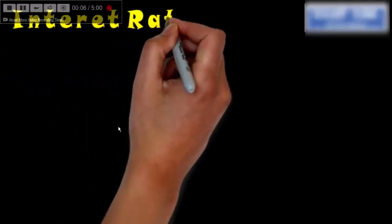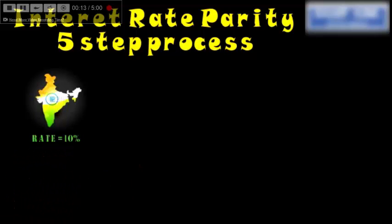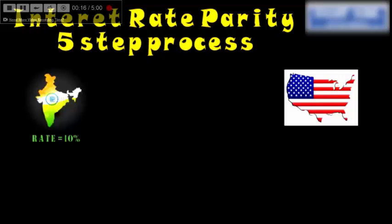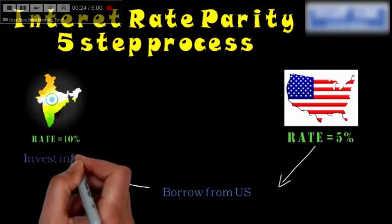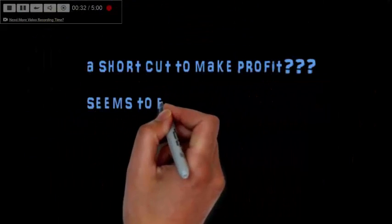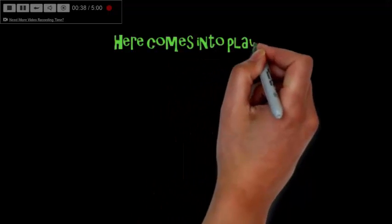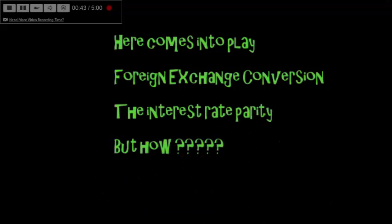In this video we are going to discuss the interest rate parity — the logic, an example, and the process. In India the interest rate is 10%, and in the US the borrowing rate is 5%. So one might think to borrow from the US and invest in India to make a gain of 5% — a form of arbitrage gain. But it's not that easy because foreign exchange conversion will come into play, along with interest rate parity.